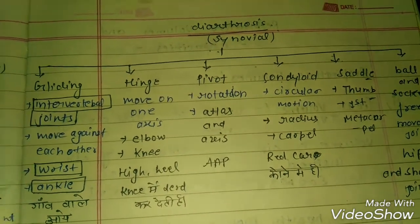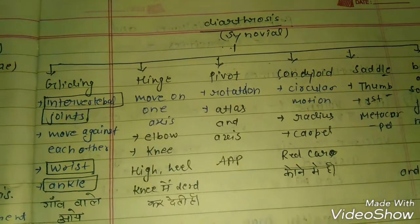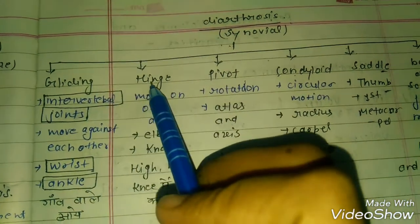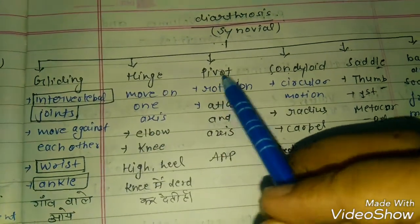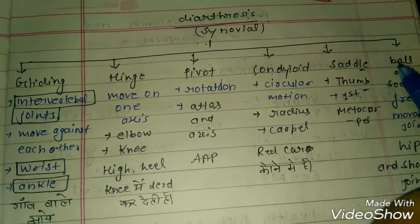Diarthrosis synovial joints have many types: gliding, hinge, pivot, condyloid, saddle, and ball and socket.